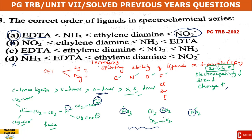Carbon monoxide is a strong field ligand. The spectrochemical series discusses the increasing order of splitting ability of ligands on the d-orbitals according to Crystal Field Theory.